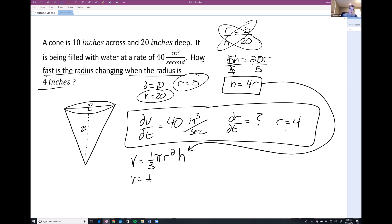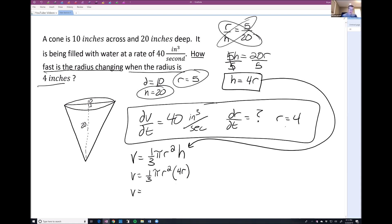So we're going to have volume equals one-third pi r squared times h, which we just said is 4r. Okay, so if I simplify this problem then, we get that the volume is 4 thirds pi r cubed.